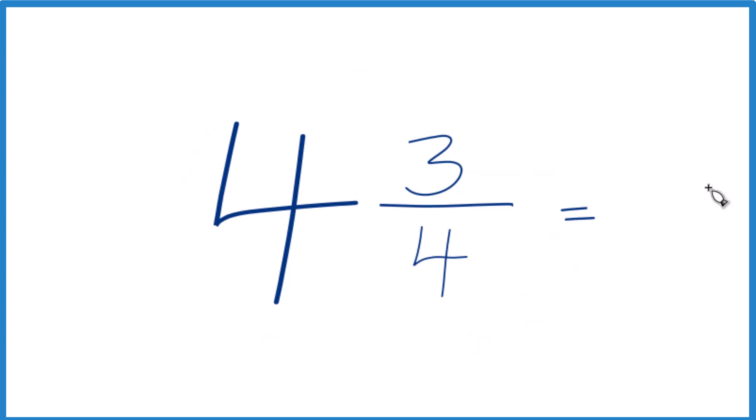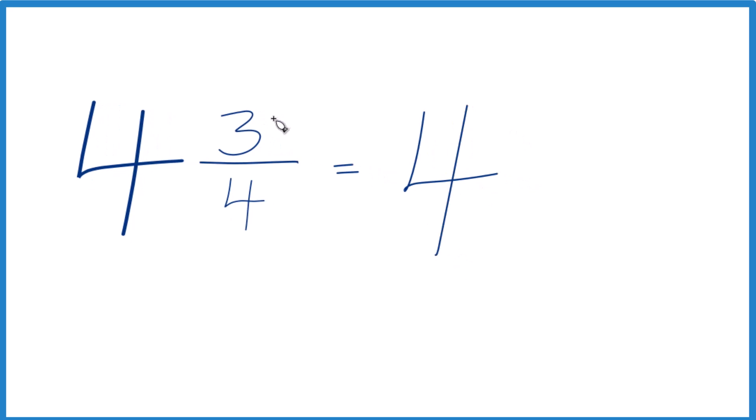So we have a whole number here, 4, so let's just put 4 there. Then we're left with 3/4. That's what we need to get to a decimal.